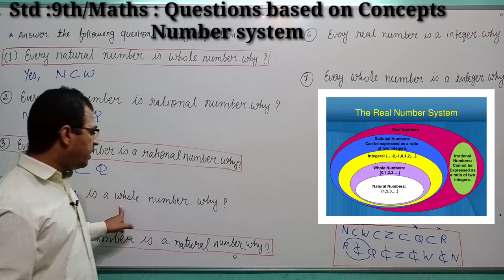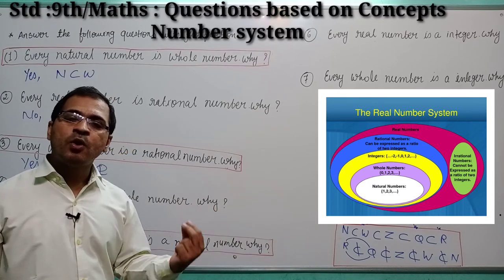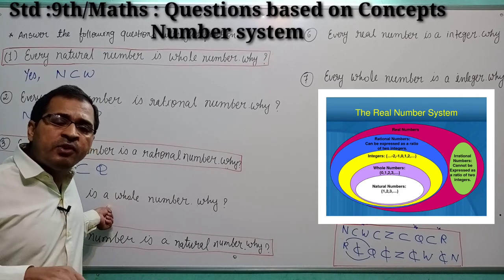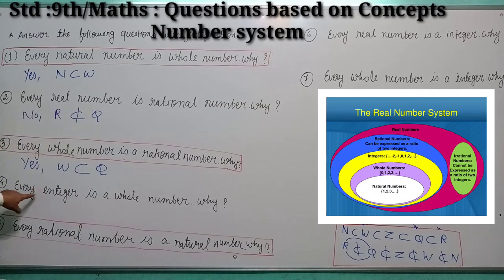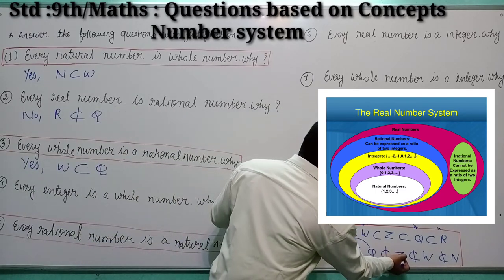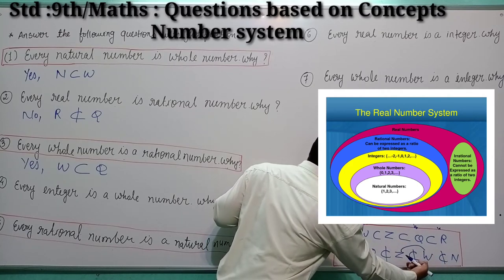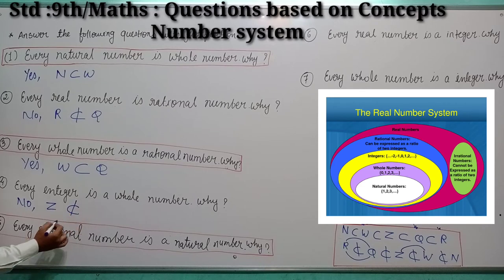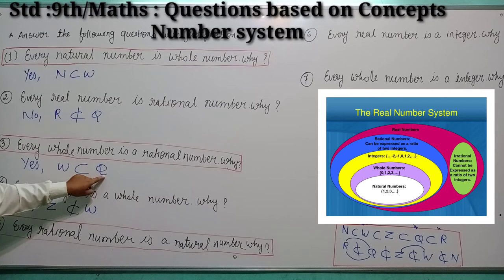Every integer is a whole number. We know that whole numbers start from 0, 1, 2, 3, 4. But integers include all positive, all negative numbers, and 0. So every integer is a whole number — it is not possible. Because in integers, negative numbers are included, while in whole numbers only positive numbers and 0 are included. So the answer is no — every integer is not a subset of whole number. This symbol indicates that all elements of whole number are also elements of rational number.